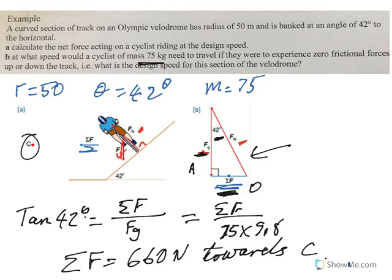we find that the sum of the forces is 660 Newton towards C, the centre of our circle. Alright, so the net force acting on the cyclist riding at design speed is 660 Newton. Alright, so remember the design speed is about the friction and that this way.